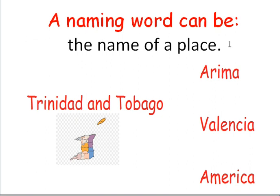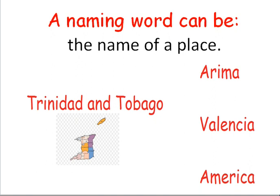A naming word can be the name of a place, such as Trinidad and Tobago, Arima, Valencia, and even America. These naming words name these places.